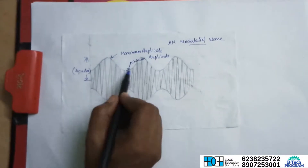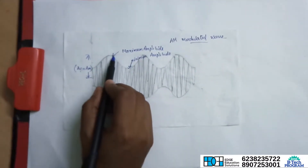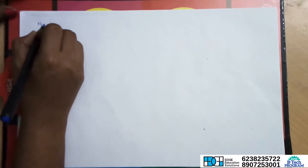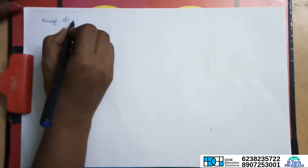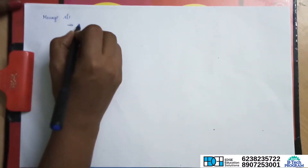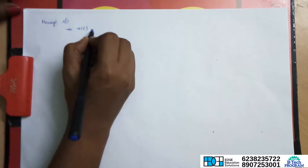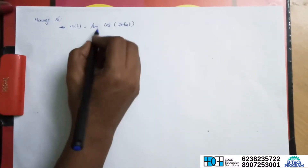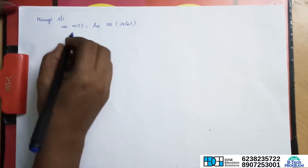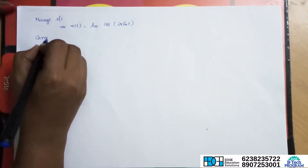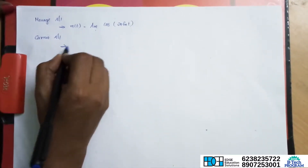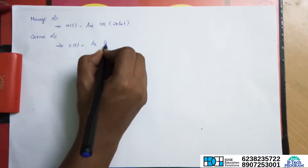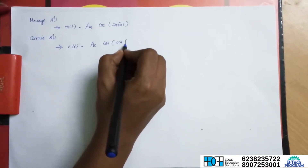Amplitude Modulation: m of t is equal to Am cos 2 pi fm t. This is the message signal amplitude. The carrier signal c of t is equal to Ac cos 2 pi fc t.